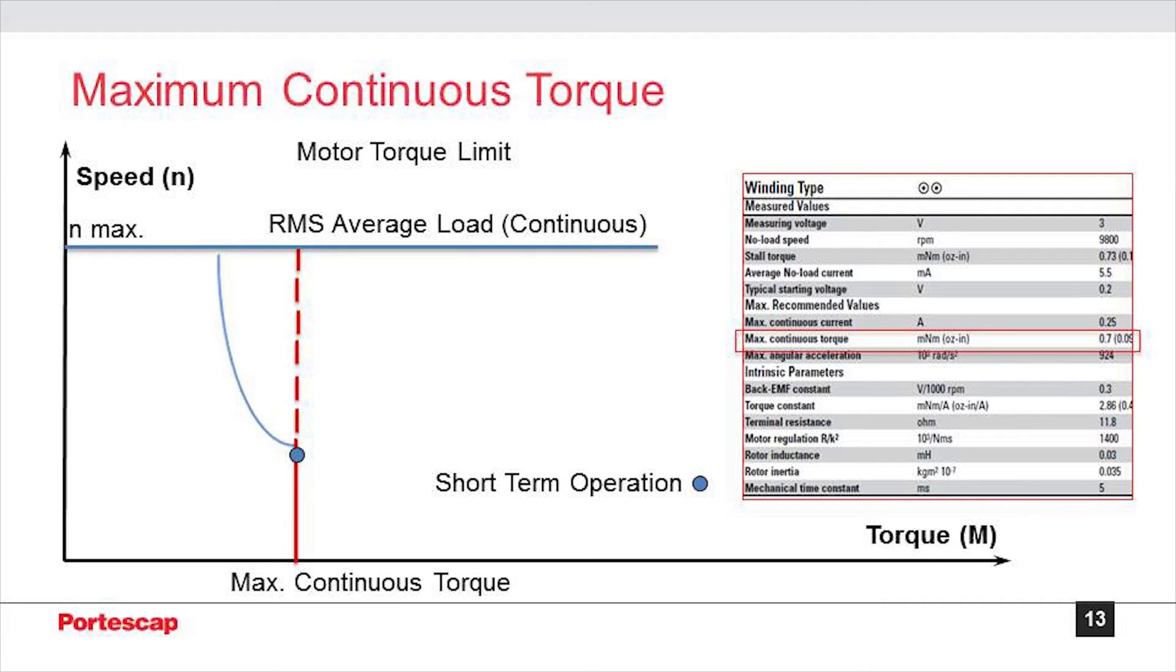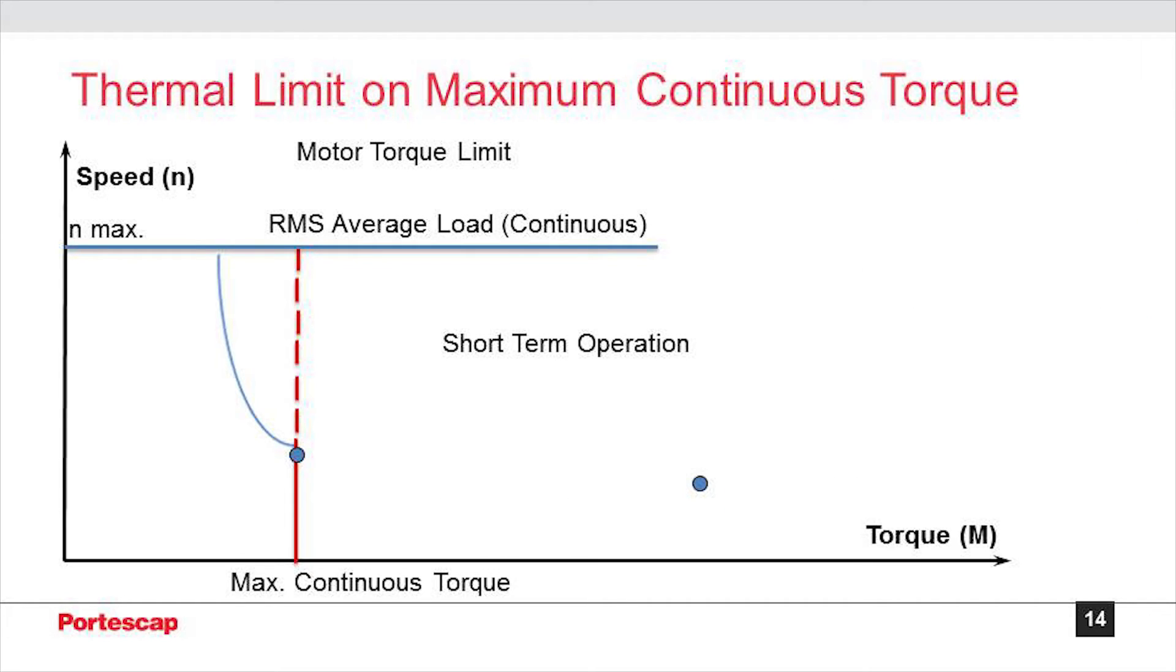We need a motor with higher max continuous torque than the torque required in the application. At the same time, we need a motor that can produce higher torque for required acceleration for short periods of time in the application as well. The max continuous torque can be found in our catalog page. The max continuous torque also defines the thermal limit of our motor.